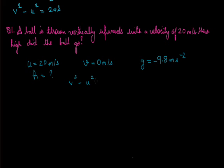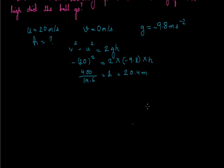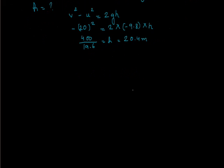Using the third equation: v squared minus u squared equals to twice of gh. Substituting the values — v is 0, so we get minus 20 squared equals 2 multiplied by minus 9.8 and h. On solving, we get 400 divided by 19.6 equals h, giving us 20.4 meter. This is the maximum height attained by the ball thrown with a velocity of 20 meter per second.